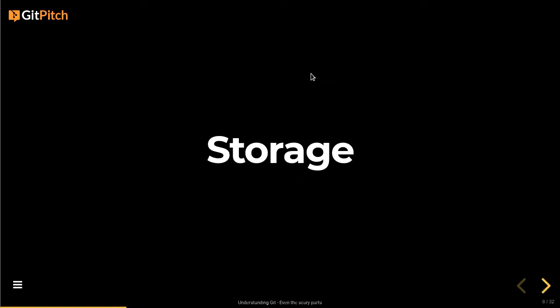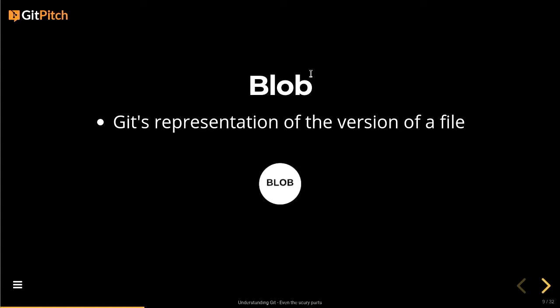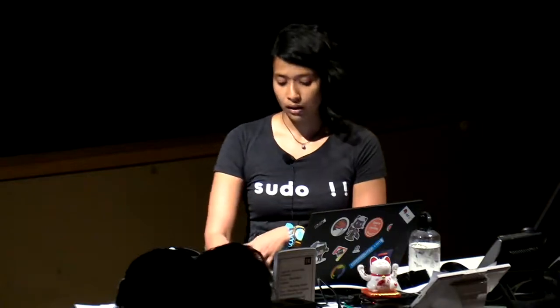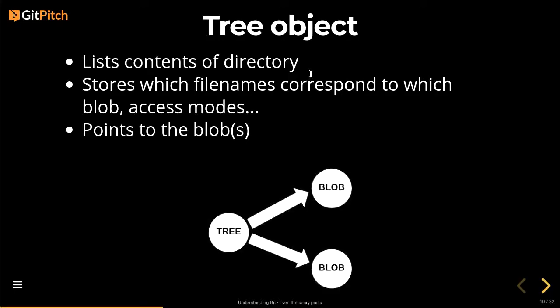A high-level view of how Git storage works. A blob is the way Git represents every version of every file in a repository — it stands for binary large object. You don't need to know much about it; just know that Git looks at every file as a blob. Then there's the tree object, which has a list of every file in the repository and maps it to each blob via pointers.